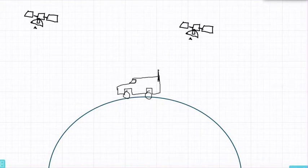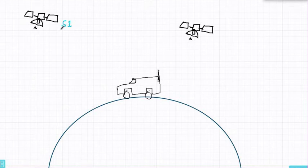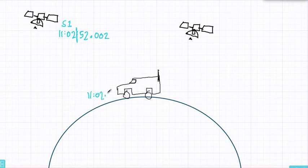We have two satellites. We could have more but two will do. And a van with a GPS receiver. The satellites know where they are but the van doesn't. Satellite S1 sends out its position at a precise time. Here it's 11.02 and 52.002 seconds. But the GPS receiver in the van gets a signal at 11.02 and 52.008 seconds. That's a difference of 0.006 seconds.